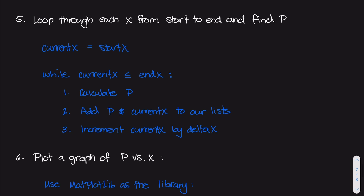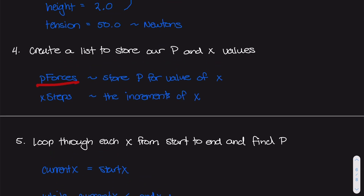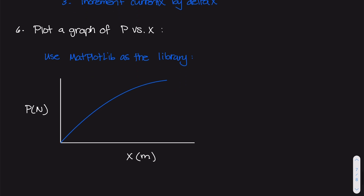The very last part of the problem is to plot P versus x for all values of x. In Python, we can use a library called matplotlib — spelled M-A-T-P-L-O-T-L-I-B. We'll use this library to graph the diagram where the x-axis is the increments of x from 0 to 4, and the y-axis is the force P calculated for each increment. That's essentially the algorithm — let's jump into the next part and start coding the solution.